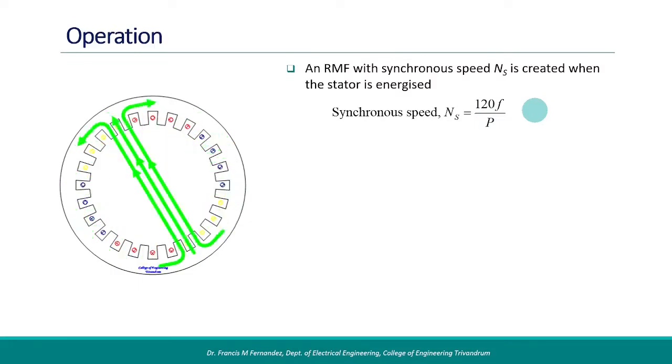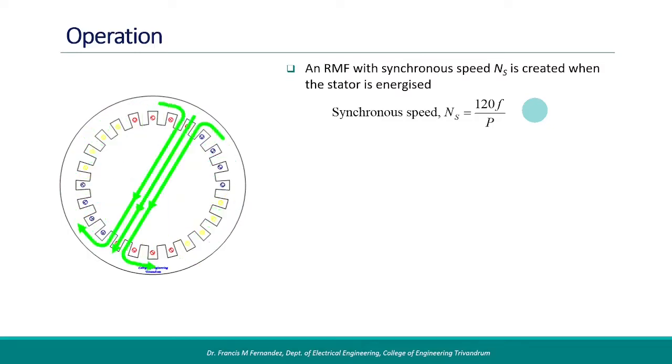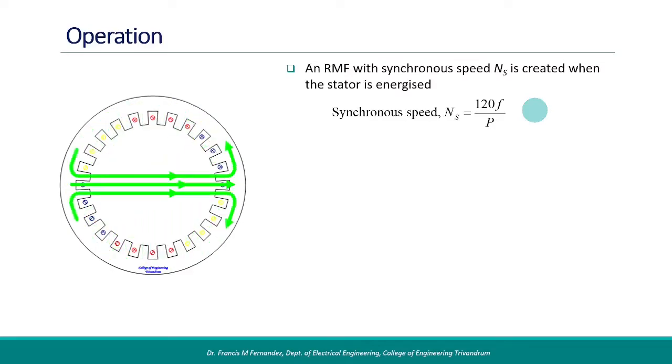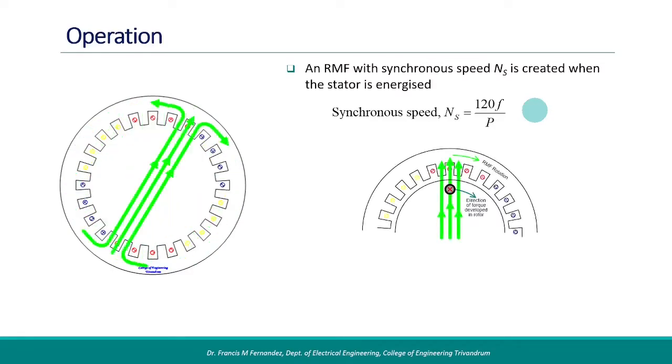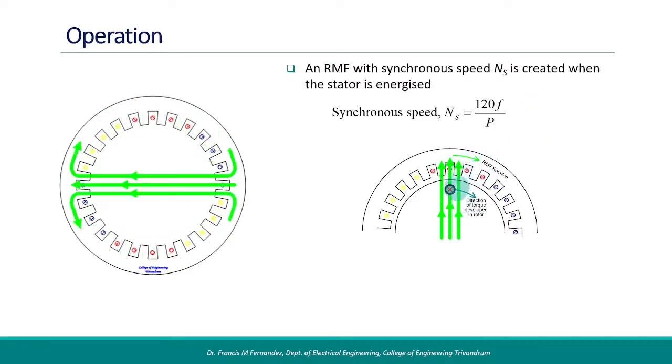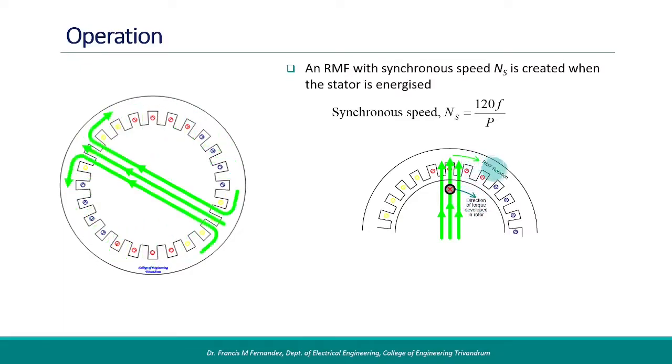The picture here represents a machine with a two-pole winding. The RMF will have its influence on the rotor conductors and induces a current in it. The interaction between the rotor current and the stator flux produces a torque on the rotor conductors and causes the rotor to rotate in the same direction as that of the RMF.